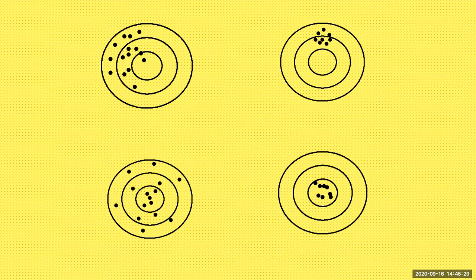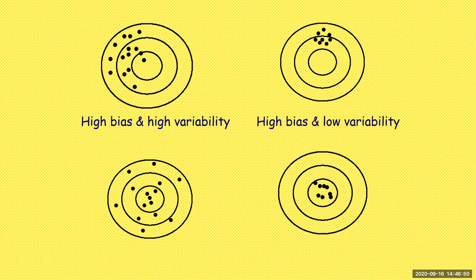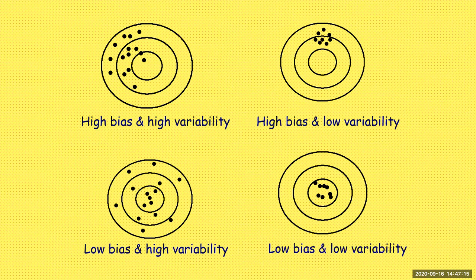Here are some visuals of bias and variability using dartboards. Top left: high variability — the dots are all spread out — and high bias, because we're not really toward the middle. Top right: high bias — not toward the center — but points are close together, so low variability. Bottom left: low bias — more centered in the middle — but a much greater range, so high variability. Our ideal is bottom right: low bias and low variability.